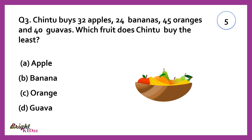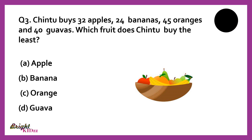Chintu buys 32 apples, 24 bananas, 45 oranges, and 40 guavas. Which fruit does Chintu buy the least? Answer: Banana.